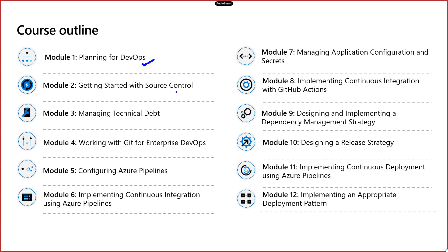The next topic is where we start working with source control. We'll use something called Azure Repo. We are going to pull the code, do a check-in and check-out. We'll try to understand how the commit operation works, how the pull and push operations work. Those things we are going to learn in the second topic.